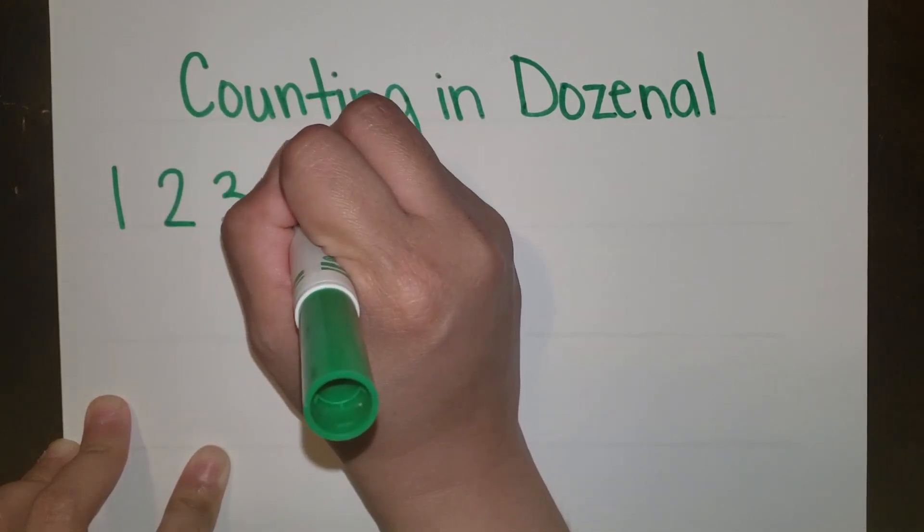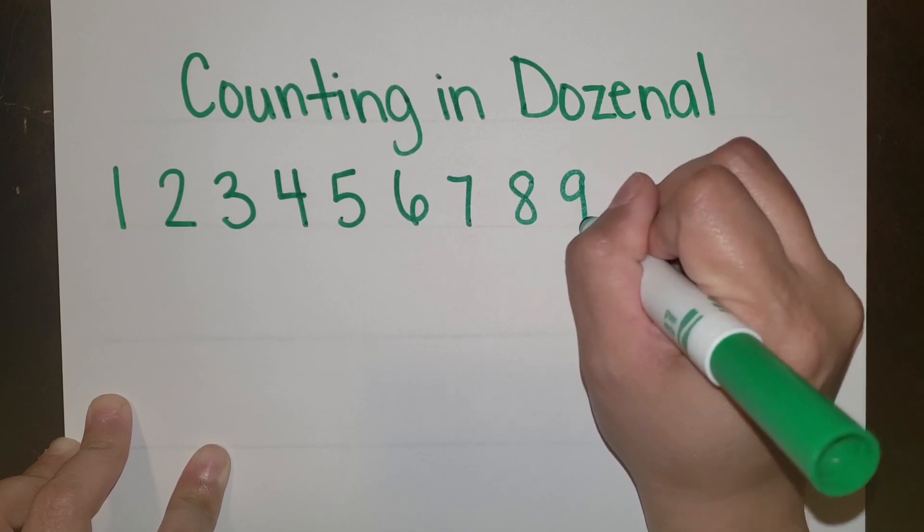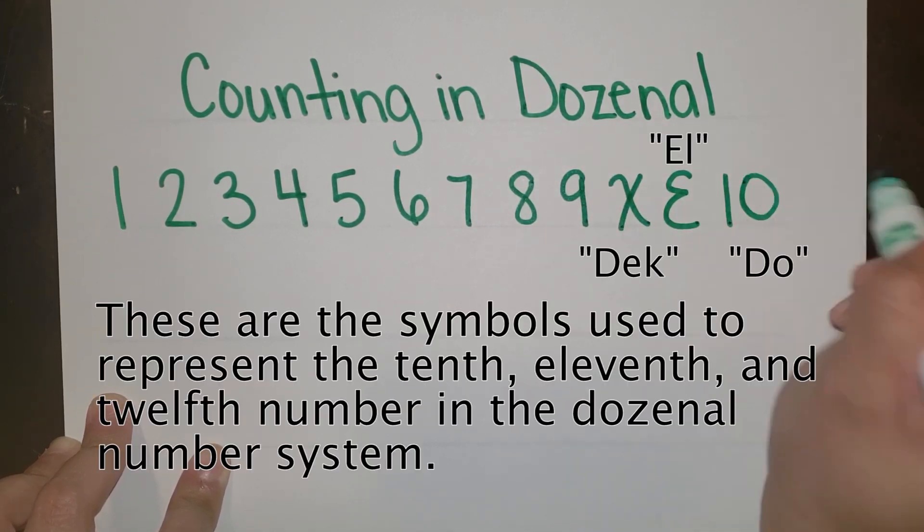1, 2, 3, 4, 5, 6, 7, 8, 9, DEC, L, DOE. Notice those last three are a bit different than the base 10 number system.